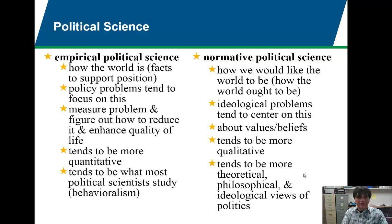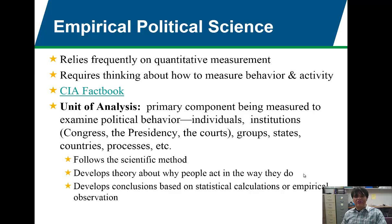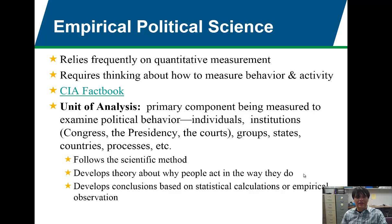Empirical political science relies frequently on quantitative measurement. It requires thinking about how to measure behavior and activity, putting that into a data sheet with statistics and facts, and then using those statistics to predict how the world is going to be. One example is the CIA World Factbook, which collects lots of information on different countries throughout the world. Empirical political scientists will look at the World Factbook to figure out, say, how the economy of Burma or Ukraine is doing, then collect data and run statistical analysis.